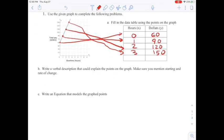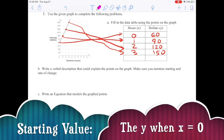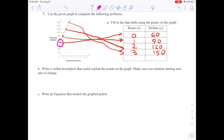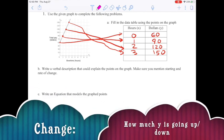Now, a verbal description that could explain the points on the graph. They want us to mention how it starts and how it changes. This is really important. Starting value is always what's going to be happening at X equals zero. So here, also known as the Y-intercept, and also shown here in our table. When X is zero, Y is $60. So it looks like when you work zero hours of overtime, you still make $60.